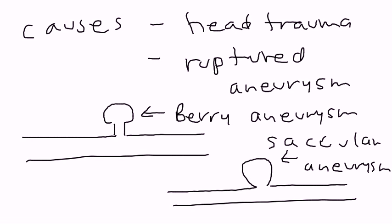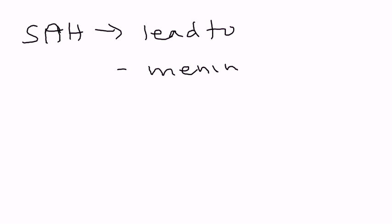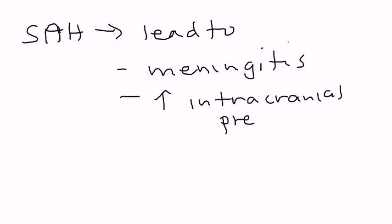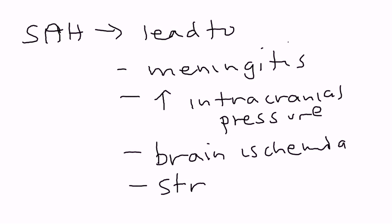So, why is this important? Why is a subarachnoid hemorrhage important? Well, subarachnoid hemorrhage is very important because it can lead to a lot of problems. And here's a list of things. It can cause meningitis. It can also cause increase in intracranial pressure. It can also cause a person to develop brain ischemia, where the brain tissue is not getting enough blood. And then it can also cause stroke and cerebral edema.